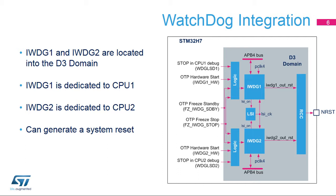IWDG1 is dedicated to CPU1 usage, and IWDG2 is dedicated to CPU2 usage. For each Independent Watchdog, it is possible to select the hardware or software start via Option Bytes. For each Independent Watchdog, it is possible to select if the watchdog will freeze when the associated CPU is in debug or core halted mode. Please refer to the Microcontroller Debug Unit, or DBG-MCU, description for details.